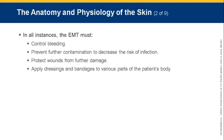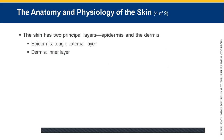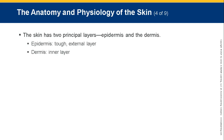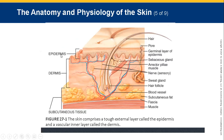Apply dressings and bandages to various parts of the patient's body. The skin varies in thickness — it is thinner in the very young and very old, thinner on the eyelids, lips, and ears than on the scalp, back, and soles of the feet. The skin has two principal layers: the epidermis and the dermis. The epidermis is the top external layer; the dermis is the inner layer containing blood vessels and nerves. Below those is the subcutaneous or fatty tissue.